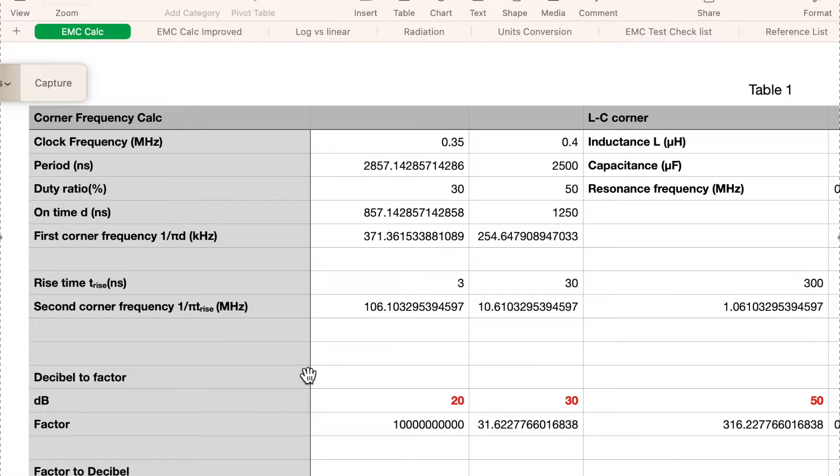First of all, let's have a look at the equation we mentioned. Here we have this EMC calculation sheet, which you can download from my website for free. We have a rise time T rise in this Excel sheet, and we have the second corner frequency calculation.